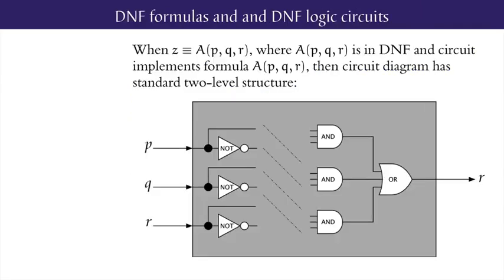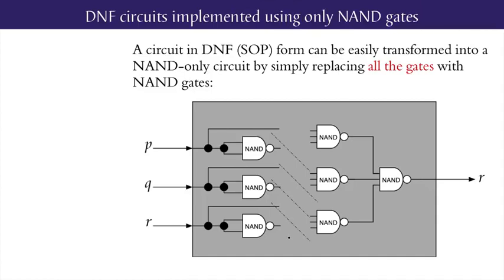When we characterise an output as a DNF formula in terms of the inputs, the resulting logic circuit diagram will always have a standard two-level structure: at the outer level, a single OR gate with two or more inputs, and at the inner level, a row of two or more AND gates which in turn combine inputs or their negations. One of several advantages of DNF logic circuits is that they are very easy to translate into a NAND-only circuit. Using de Morgan's law equivalences, it is easy to show that mechanically replacing every gate — whether it be an AND, an OR, or a NOT — with a suitably sized NAND gate will give a logically equivalent circuit.